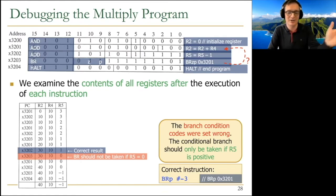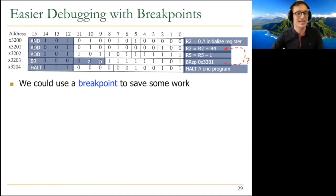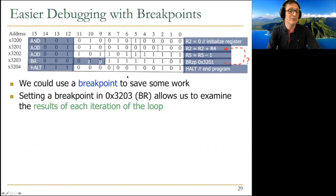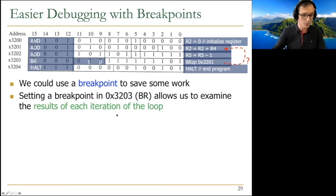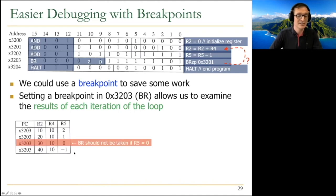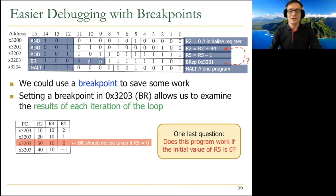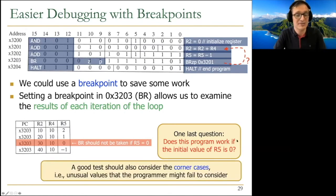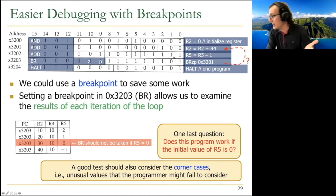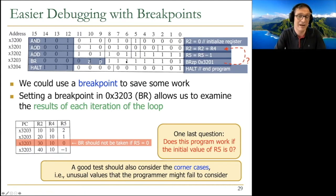With breakpoints, you can examine results at each loop iteration rather than every instruction. Another bug: if the initial value of R5 is 0, the program doesn't work because it executes the addition first — adding R4 to itself — giving 10 instead of 0. The program should test whether R5 is 0 before entering the loop. A good test should consider corner cases — unusual values the programmer might fail to consider.